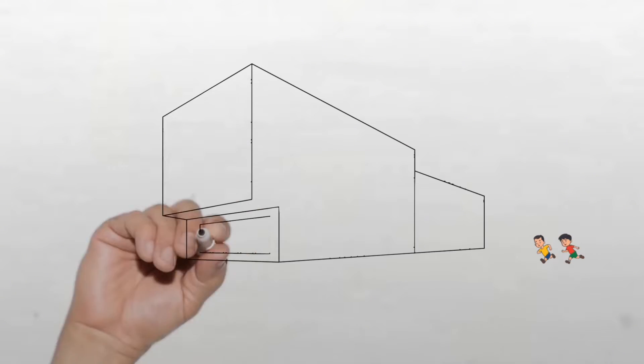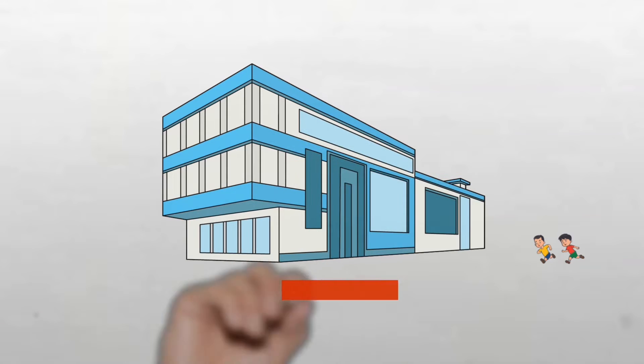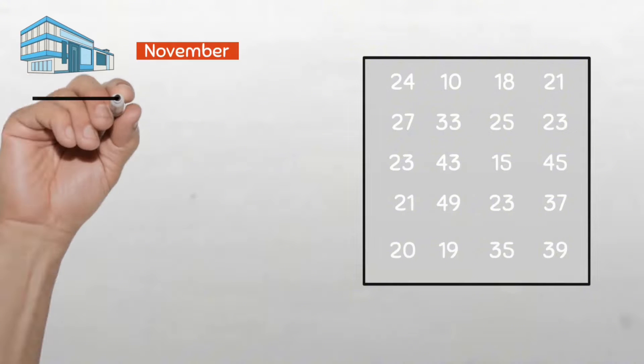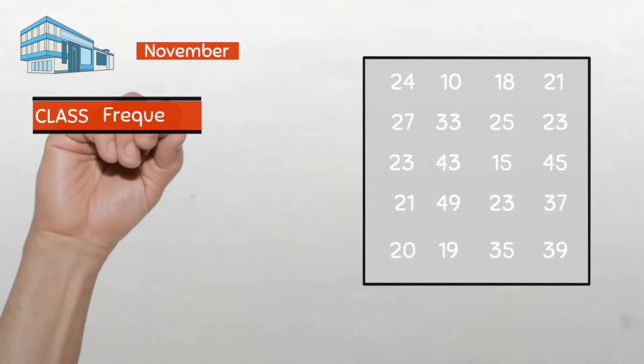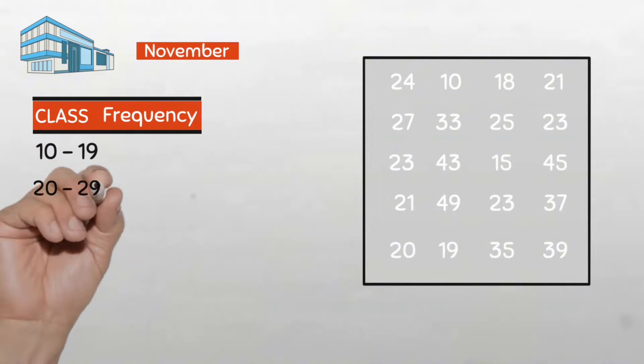Now let's look into the data on the daily attendance of children in a pediatric clinic in the first 20 weekdays of the month of November. Let us put this data into a group frequency distribution with these four classes: 10 to 19, 20 to 29, 30 to 39, and 40 to 49.